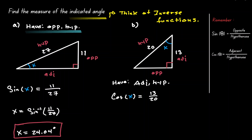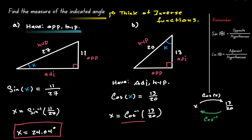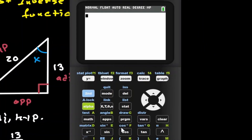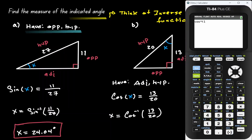If we plug angle x into our cosine function we get 13 over 20. Applying the inverse of cosine, we should get our angle back. So x equals the inverse of cosine evaluated at the ratio 13 over 20. To access the inverse of cosine on the calculator — it's above the cosine button in blue — press second, then cosine. Notice there's a little negative one on top of it, so we know we're okay. Now let's plug in our ratio 13 over 20, and our angle is approximately 49.46 degrees.